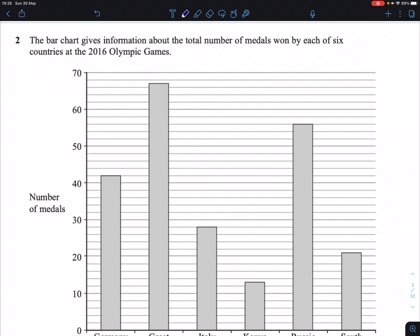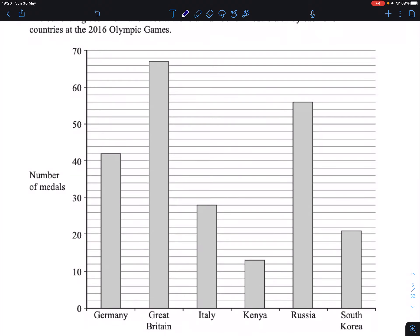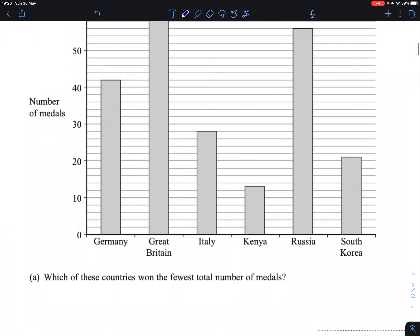Question 2. We have a bar chart here giving information about the total numbers of medals won by six countries at the 2016 Olympic Games. Number of medals there for the y-axis and the six countries mentioned along the bottom along the x-axis.